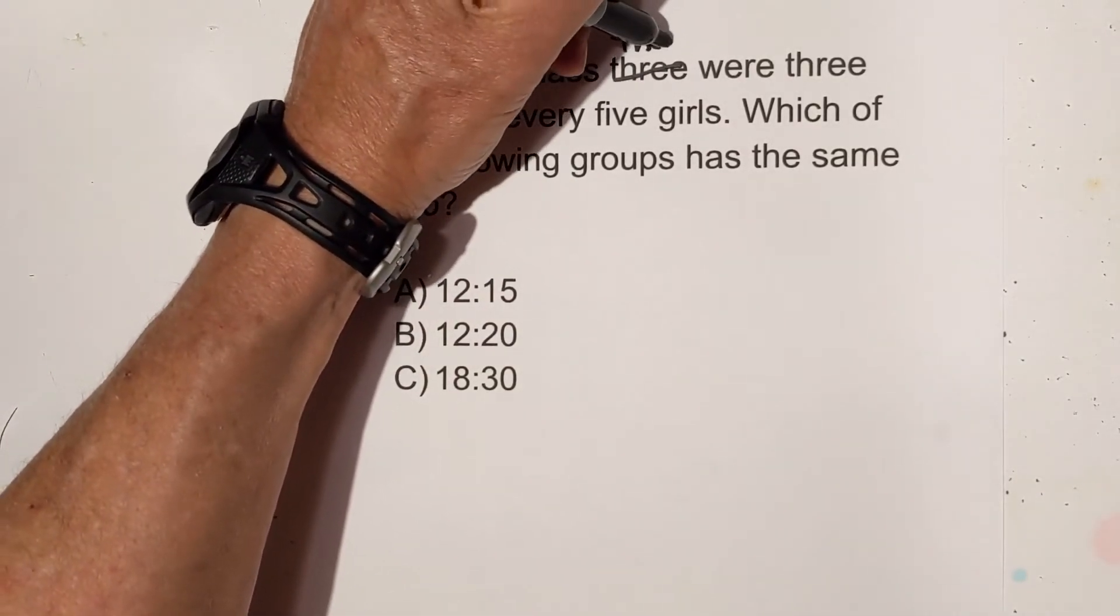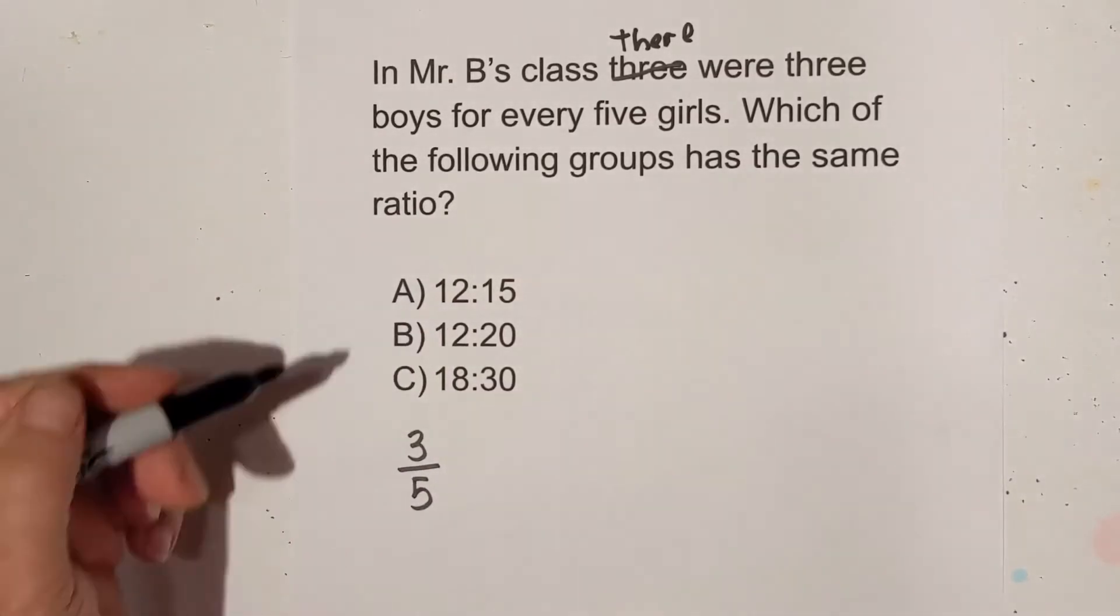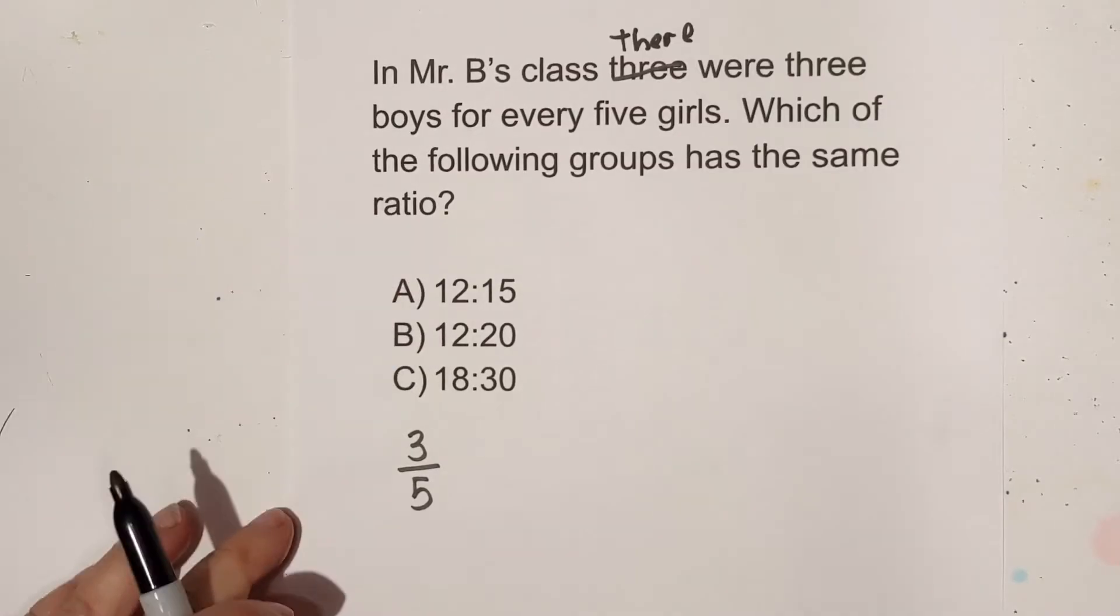Now let's apply this to a word problem. In Mr. B's class there were three boys for every five girls. Which of the following groups has the same ratio? So let's go ahead and write this as a ratio and I'm just going to write it as a fraction. So now we need to see which of these is an equivalent ratio.